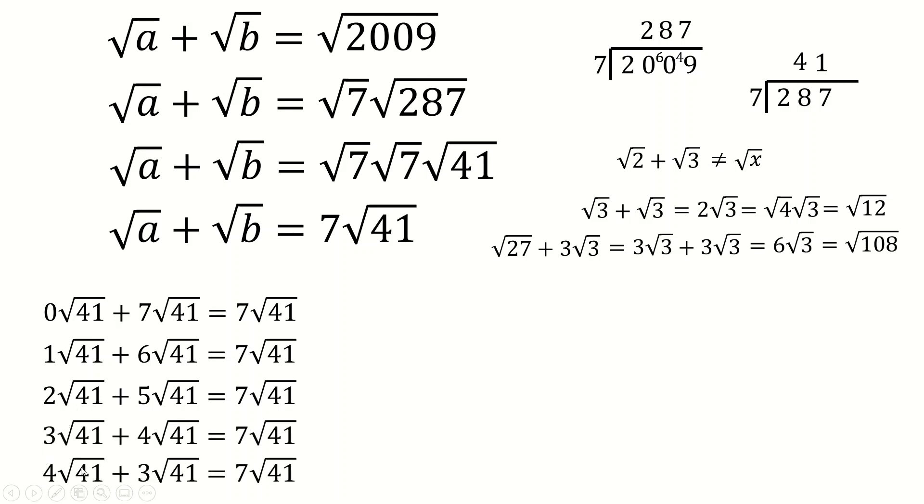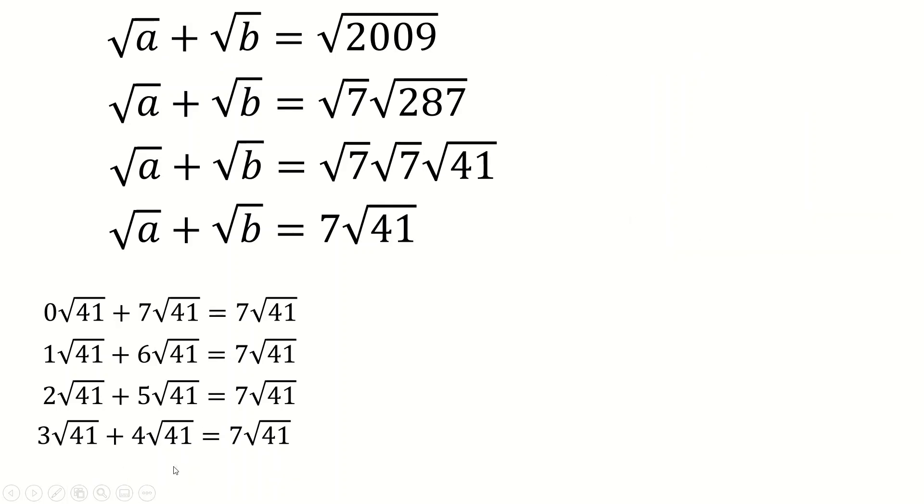Except when we get to this one we realize well this is just the same as this right. We're just going to get the opposite pair of solutions. So we can actually just stop there and just say that these are actually our only four valid possible solutions here.